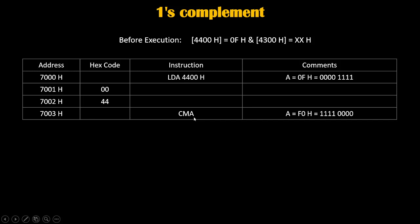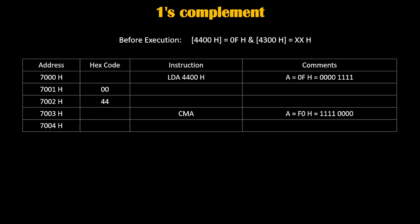CMA is a 1-byte instruction, so it takes only 1 memory location of our program. After CMA, we have the complemented value inside the accumulator. Now we want to store it at 4300h, so we write the instruction STA 4300h. Because of this instruction, the accumulator value F0h will get stored at 4300h.